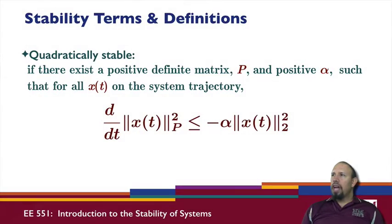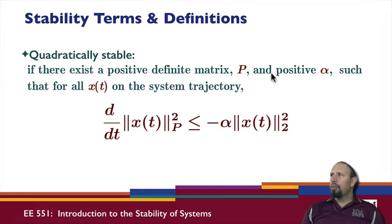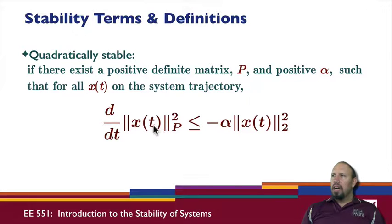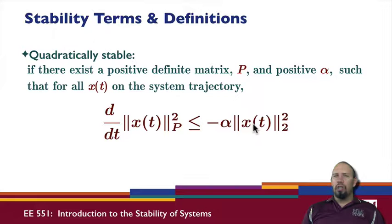Quadratic stability is a different way of looking at things. Given a positive definite matrix P and a positive constant alpha, such that for all x on the system trajectory, the derivative with respect to time of the P-norm of x squared is less than or equal to minus alpha times the two-norm squared of x. This is actually a stronger form of stability than the others.